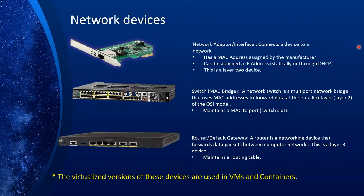Now that we've learned about the OSI model, let's take a look at some common network devices and what layer they reside in. The first one is a network adapter or network interface. It connects a device to a network, it has a MAC address assigned by the manufacturer — a unique number — and we can assign it an IP address. This is a layer two device that connects the wire to the internet, bridging layer one to layer two and to the computer.